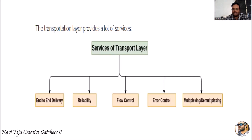Flow control of data is also checked, and if there are any errors with respect to data flow, those errors will be controlled. Multiplexing and demultiplexing also play an important role — since a single host may run multiple applications at a time, multiplexing is done at the sending end and demultiplexing at the receiving end. Based on port numbers, data is split and delivered to the respective applications or processes. All these services are provided by the transport layer, which is one of the important layers of the OSI model.